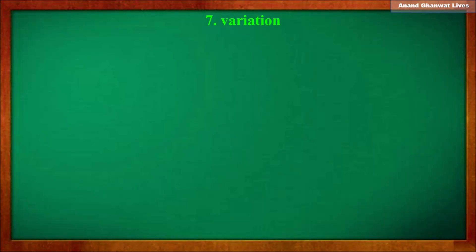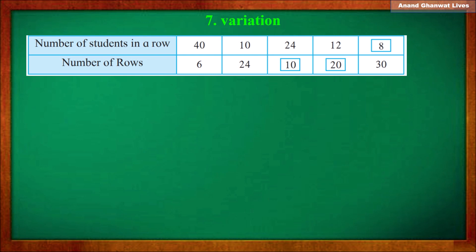Namaste, all students from 8th standard. In this lecture we are going to learn variation, specifically inverse variation. Let us observe this chart: number of students in a row and number of rows. If 40 students are in a row, the number of rows is 6. If 10 students are in a row, the number of rows is 24. If 24 students are in a row, the number of rows is 10. Observe this chart carefully and find the basic idea.